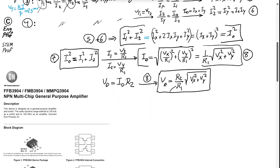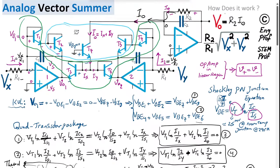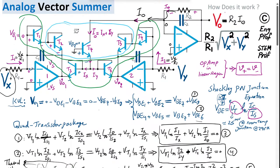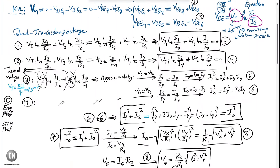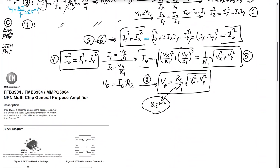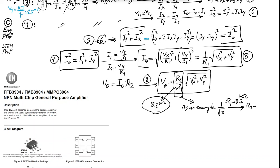For component selection: R1 must be chosen so that the minimum expected input voltage produces an acceptable minimum current I1. As an example, R1 = 8.2 kΩ and R2 = 5.7 kΩ gives a gain ratio of approximately 1/√2.